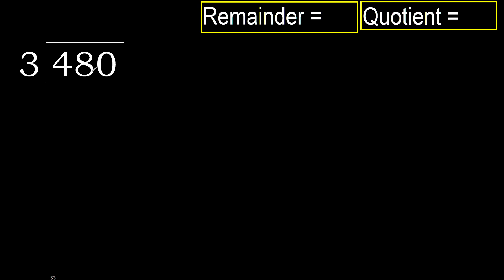480 divided by 3. 4 is not enough on its own, so let's start with 4. 3 multiplied by which number is nearest to 4 but not greater? 3 multiplied by 2 is 6 — 6 is greater. 3 multiplied by 1 is 3 — 3 is not greater. So we use 1. Subtract to get the remainder.